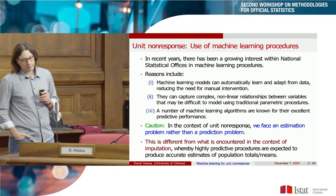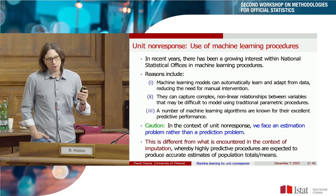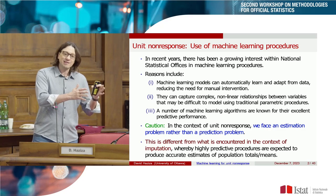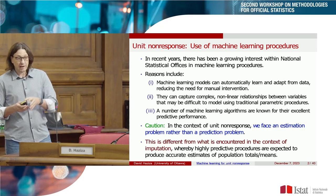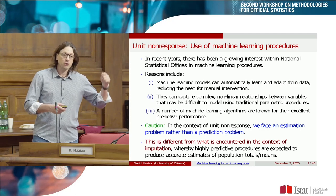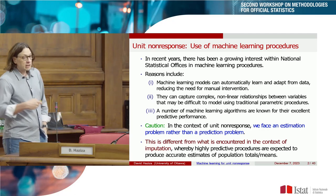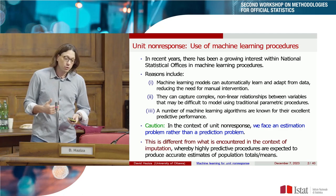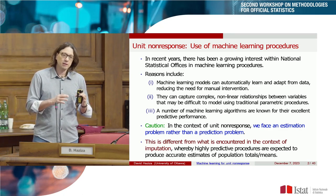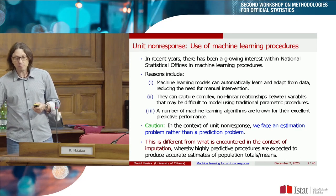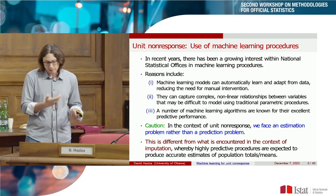However, in the context of unit non-response, we are not facing a prediction problem — we are facing an estimation problem. These are two different problems. A machine learning method that gives very good prediction may still translate into a bad estimator. At the end of the day, what we want is not prediction — we want to estimate a finite population parameter: a population mean, a population total. I'll give an example to show this.